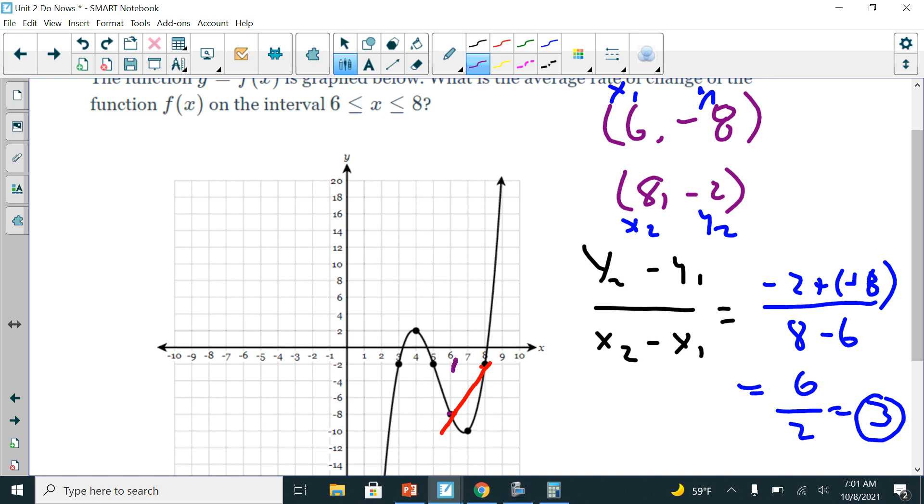So what do I mean by that? This is my rise, right? So it's going up. This is, we're counting by 2's here. So 2, 4, 6. So this here is 6. And then my run, let's go ahead and do this in green. My run is 2. So rise, which is 6, divided by 2 is equal to 3 as well. And the slope is positive because it's going up from left to right.